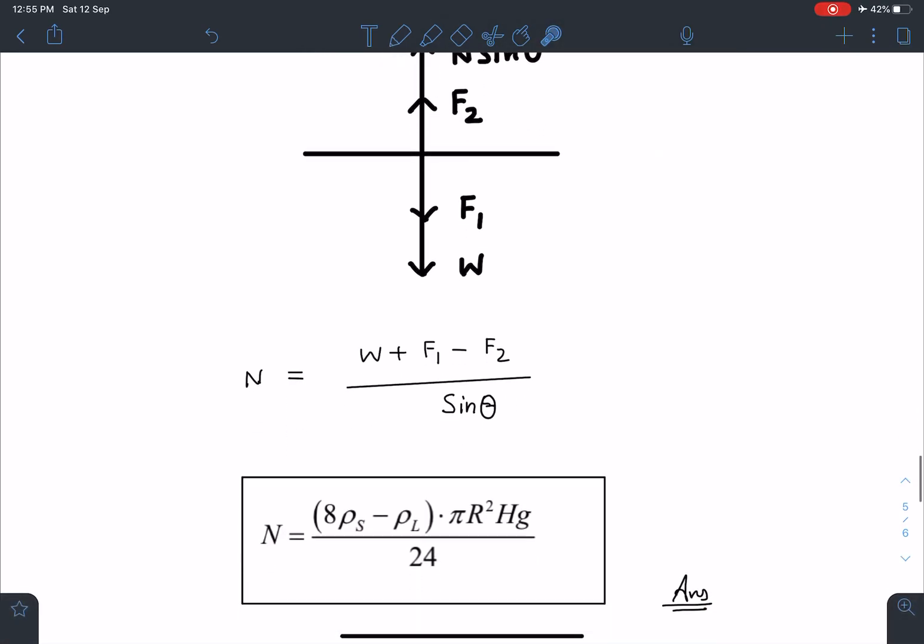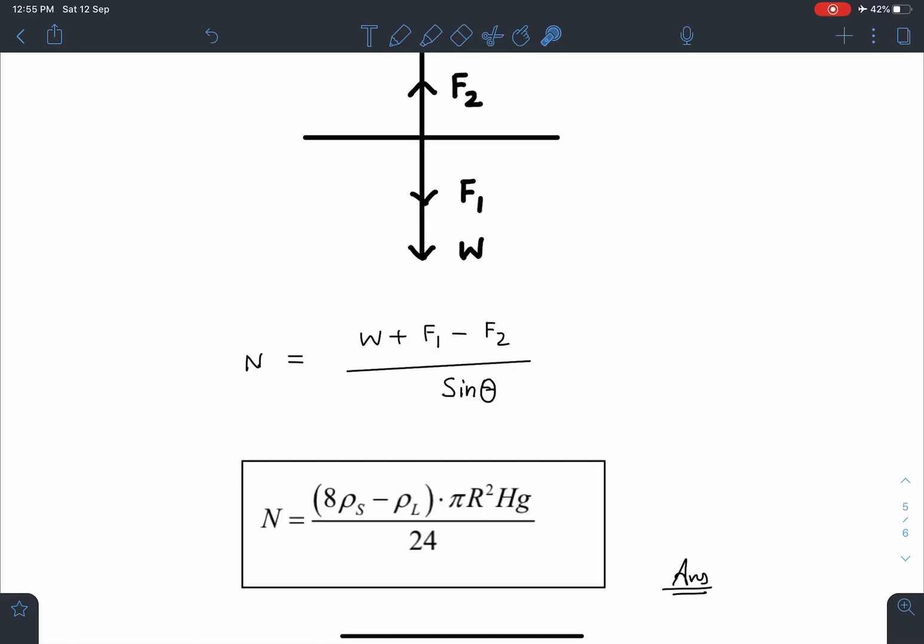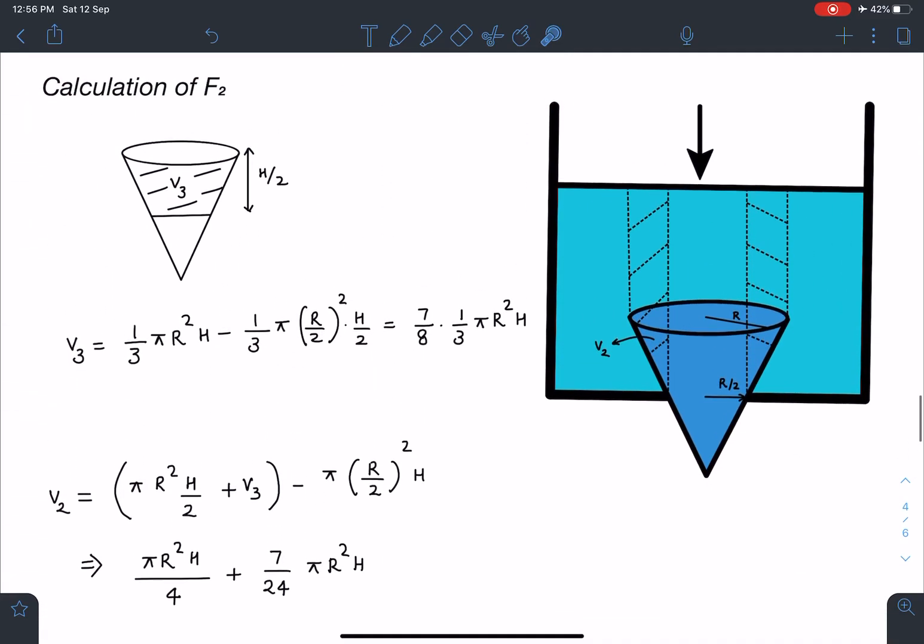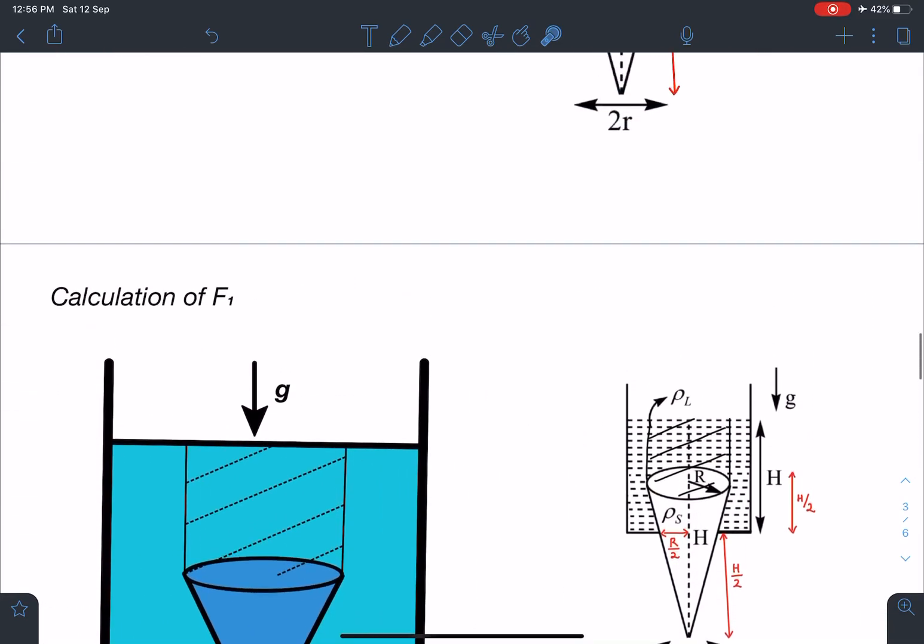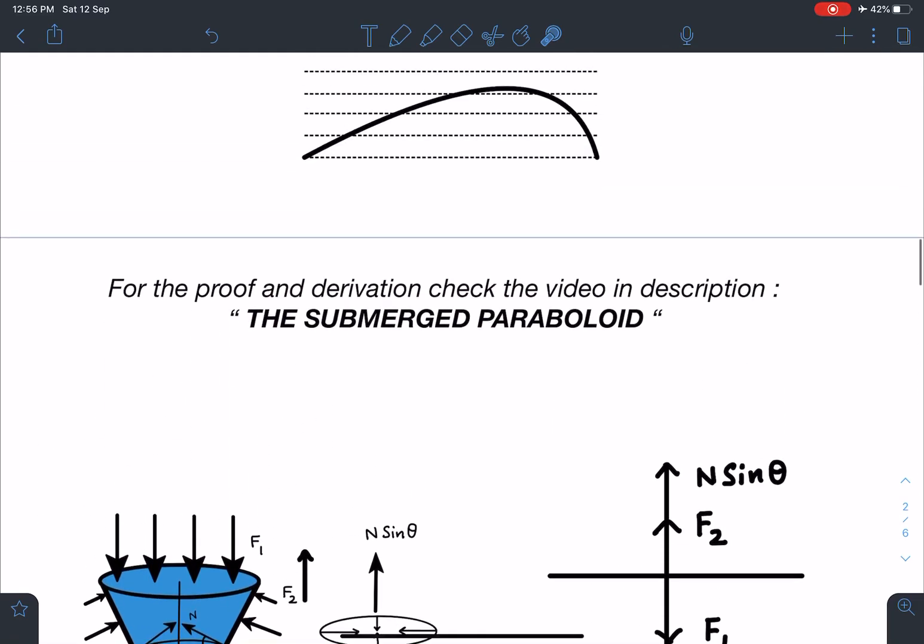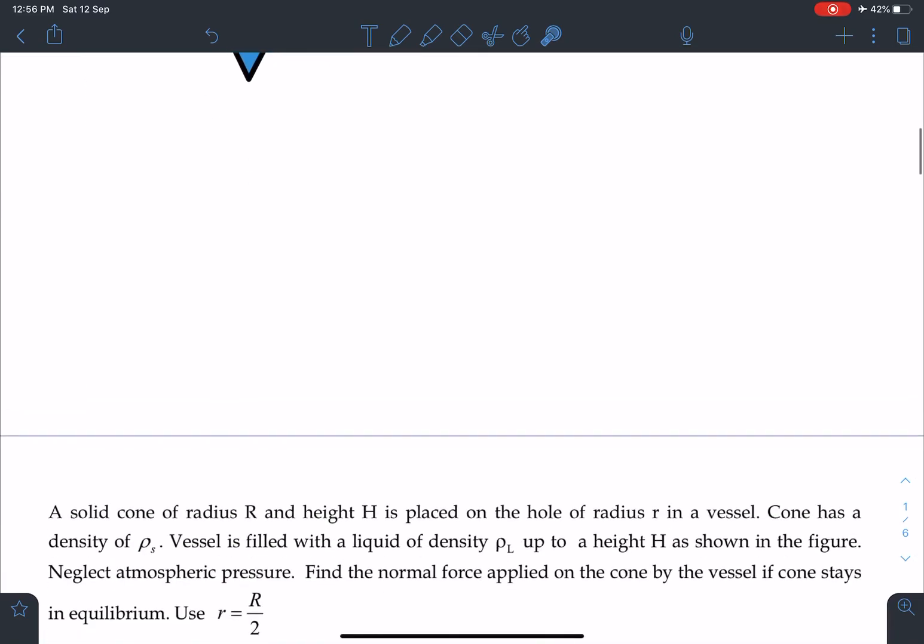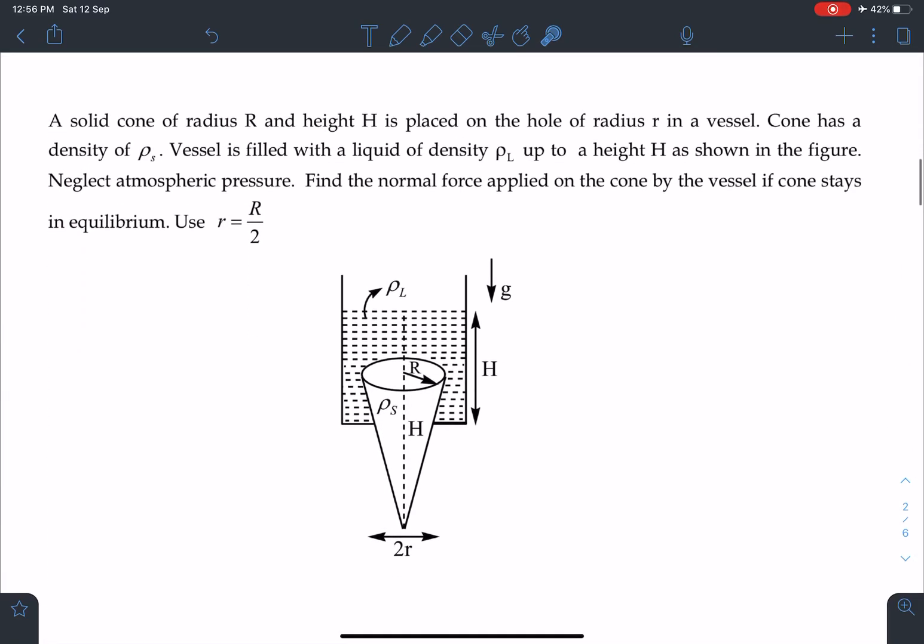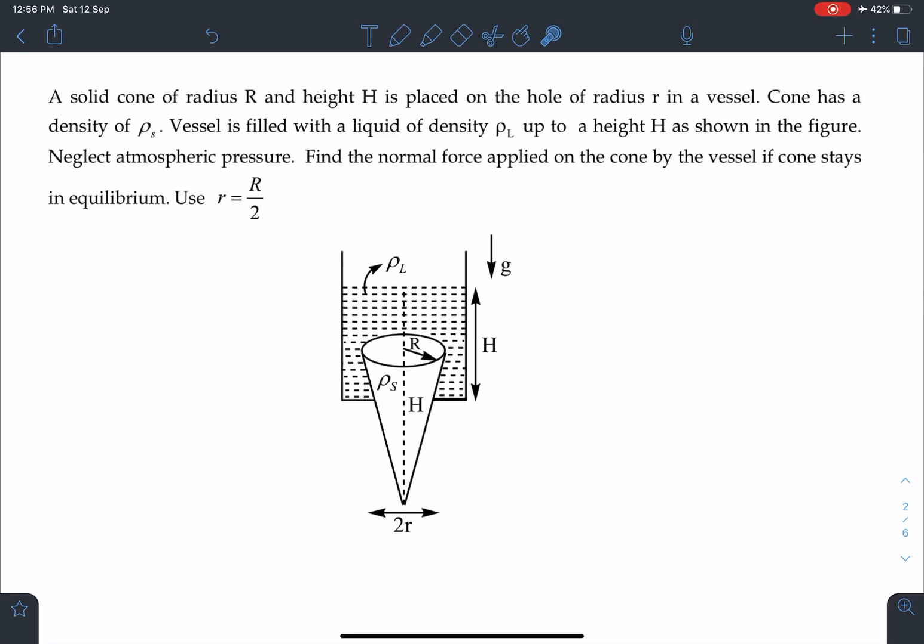So when I simplify, I am going to get this answer as N is equal to 8 rho solid minus rho l pi R square Hg by 24. This is going to be the answer for this problem. I hope the concept and the application part both are clear to you. It's a pretty interesting problem and not an easy one. Most of the students make mistake in it.